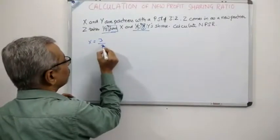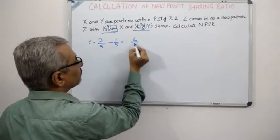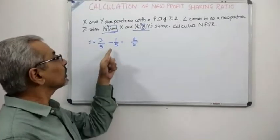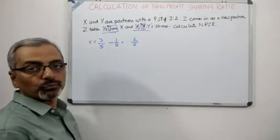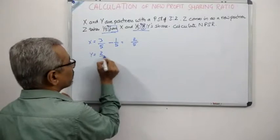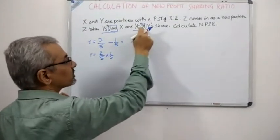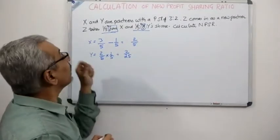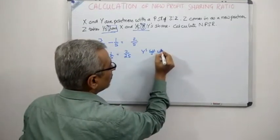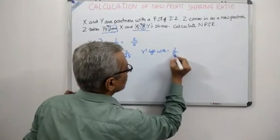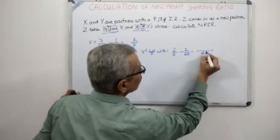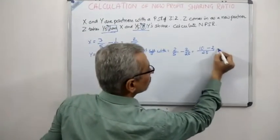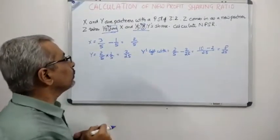X's share is 3/5 and from that one fifth has been taken, so X is left with 2/5 — very simple: X had an initial share of 3/5, and Z took one fifth 'from' that, meaning subtraction: 3/5 minus 1/5 gives 2/5. Now for Y: Y's share was 2/5, and the word 'of' has been used, so we multiply: 2/5 into 1/5 gives 2/25. That is how much Z has taken from Y, so Y is left with 2/5 minus 2/25, which gives 10/25 minus 2/25 = 8/25.